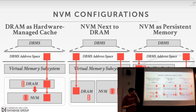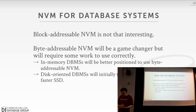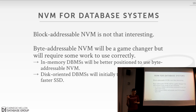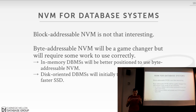The first configuration — DRAM as hardware-managed cache — will probably be the most common when NVM first comes out, because the other configurations require major software changes. If the device is PCIe bus block-oriented, it's just a faster SSD and not that interesting. But when we have byte-addressable NVM and can do loads and stores to single tuples, that's a game changer.